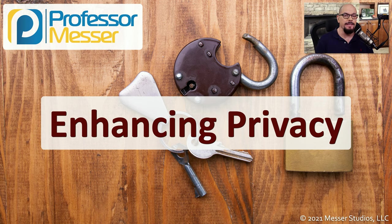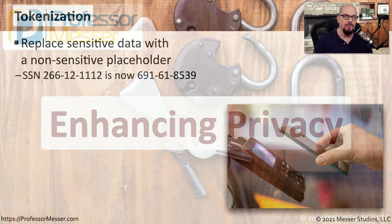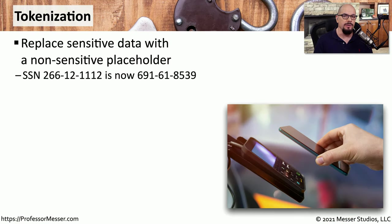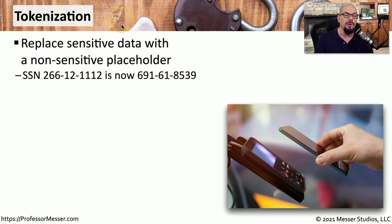Application developers have many techniques they can use to help keep our data safe. In this video, we'll look at ways of enhancing your privacy. One way to use your personal data without actually using your personal data is through tokenization. This is when we take data that normally would be sensitive and replace it with a completely different bit of data that we call a token.